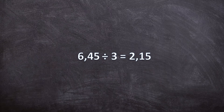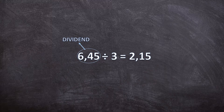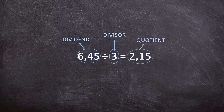Just a quick recap of the terminology: the number we'll divide is called the dividend, the number we will be dividing with is called the divisor, and the answer is called the quotient.